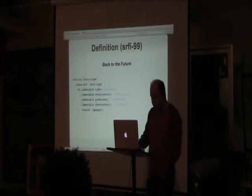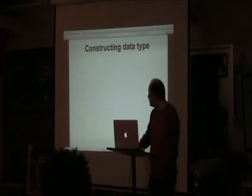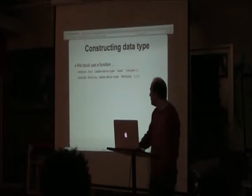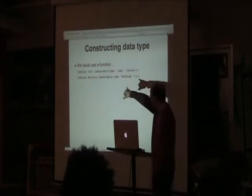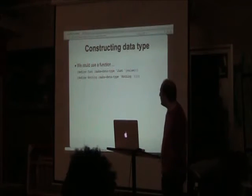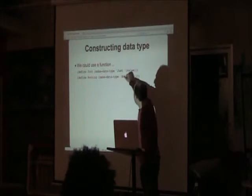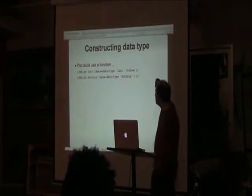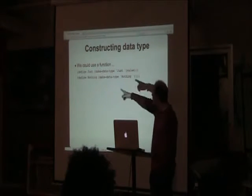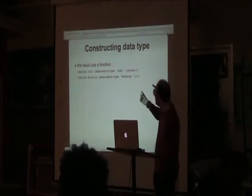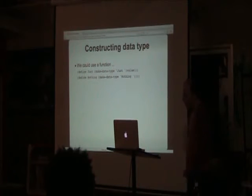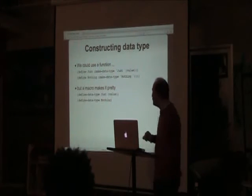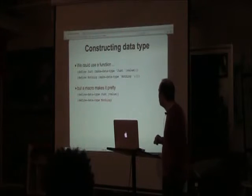For constructing data types, I have a function called make-data-type. Because everything's immutable, it's simpler — you specify the name of the type and a list of fields. In the case of Maybe, I'm creating two value constructors: Just and Nothing. I also have a macro that makes the syntax a bit prettier.